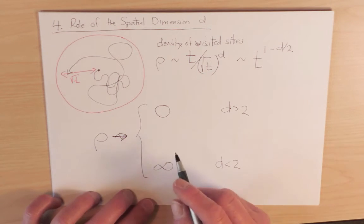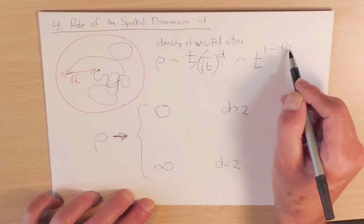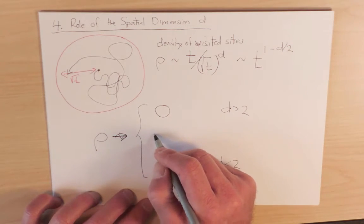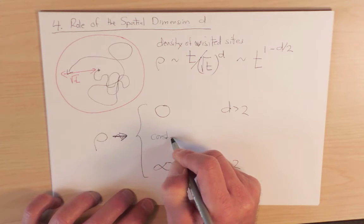In d equals 2, this exponent is equal to 0. And so it would suggest that the density approaches a constant for d equals 2.